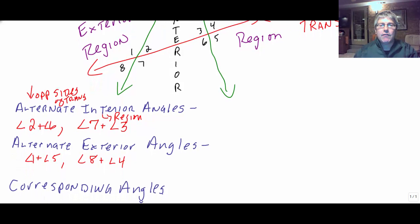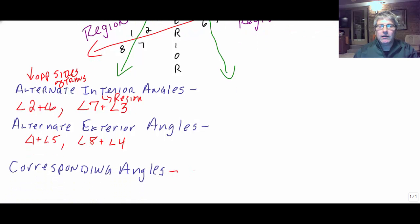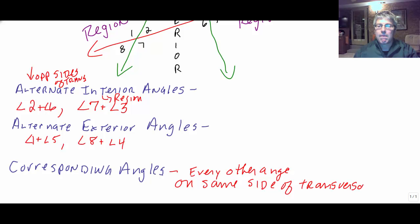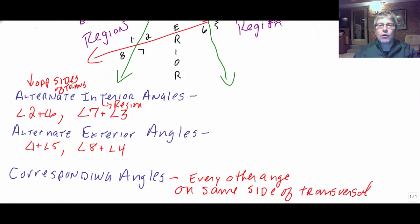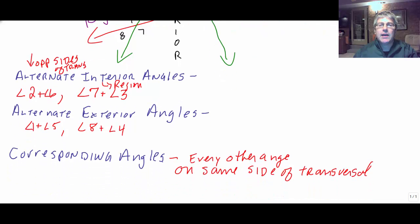And then, finally, the corresponding angles. Those I look at as every other angle, but on the same side of the transversal. On the same side of the transversal. So every other angle, we've got a lot of them. So 1, skip 2, and 3. 1 and 3 are corresponding. 2, skip 3, and 4. So 2 and 4 are corresponding. So our corresponding angles are 1 and 3 and 2 and 4. So angle 1 and angle 3, angle 2 and angle 4.